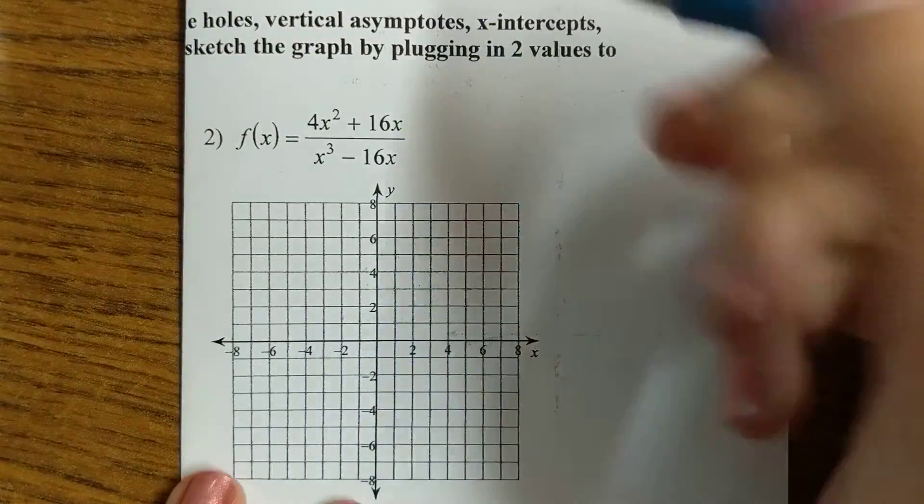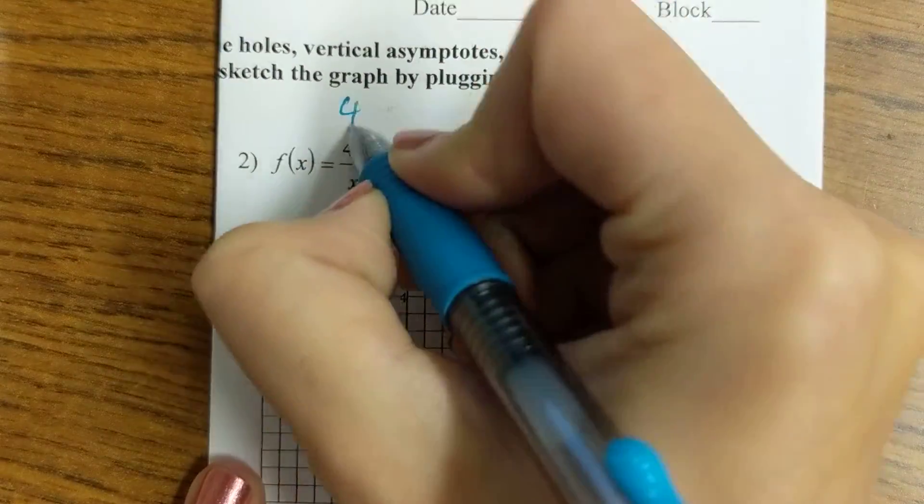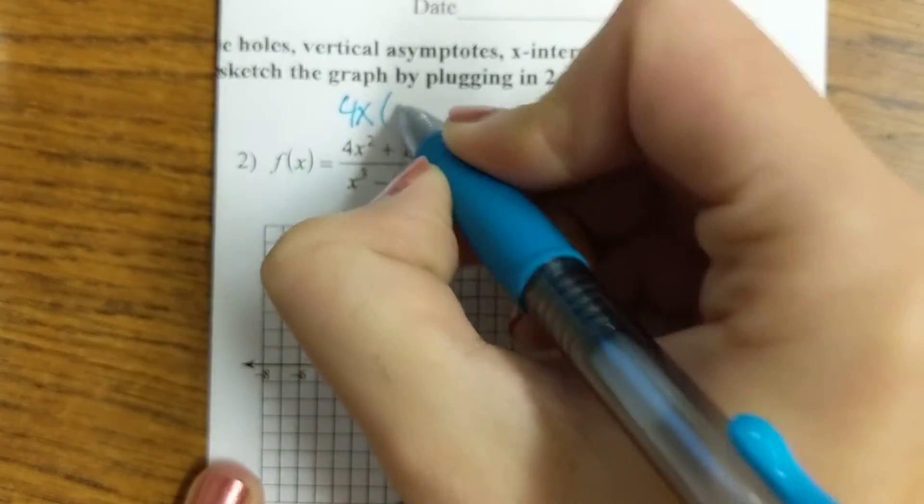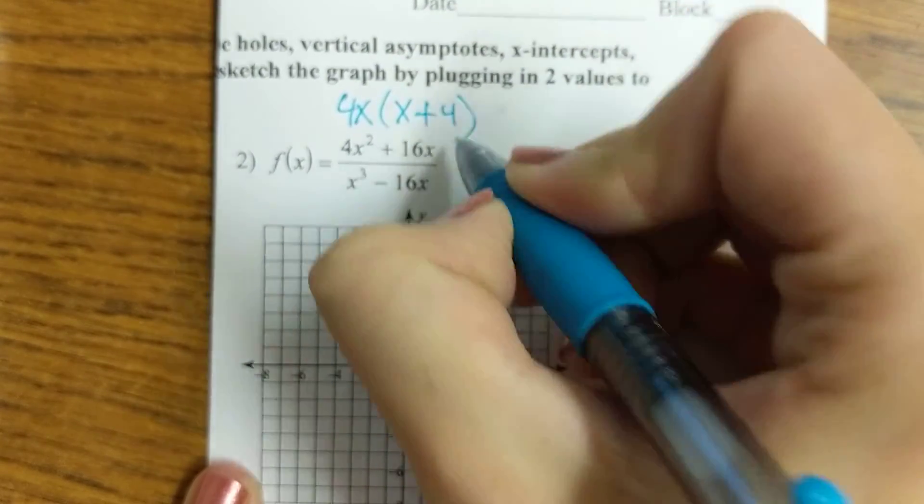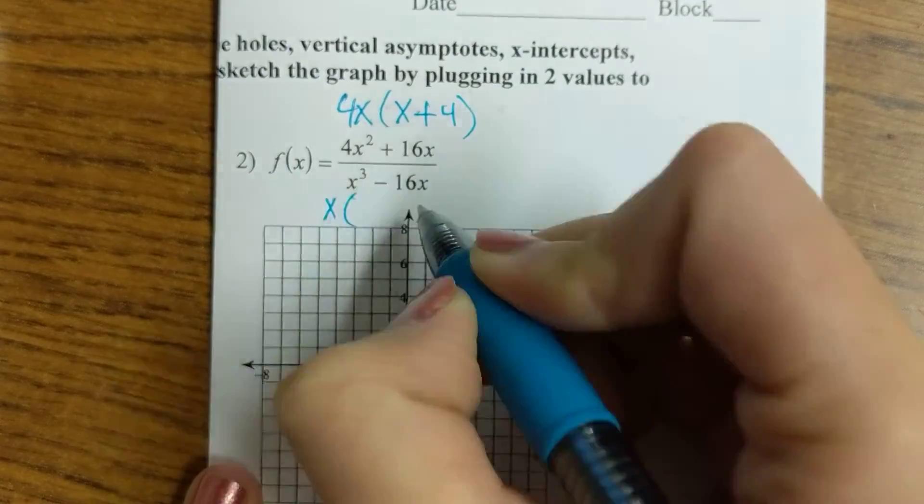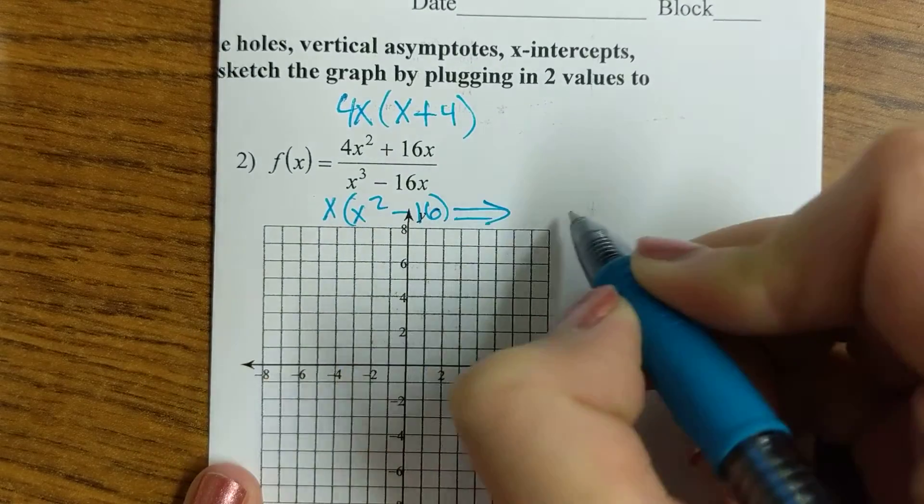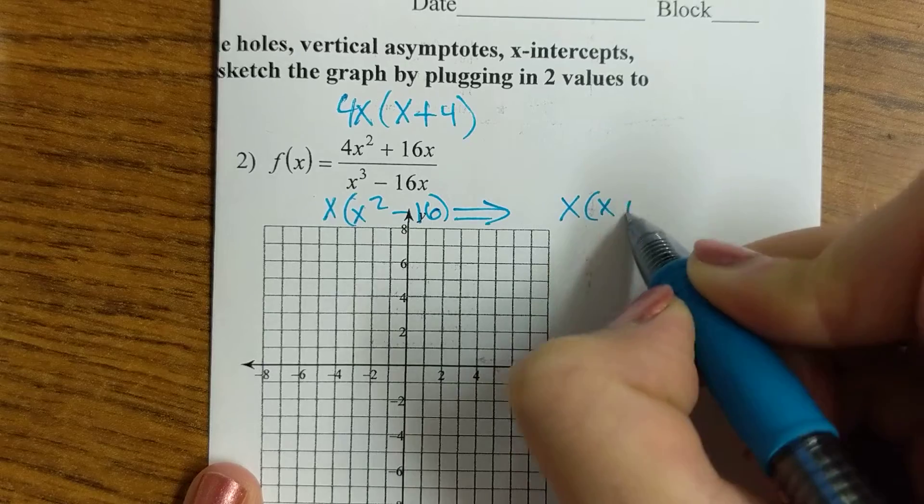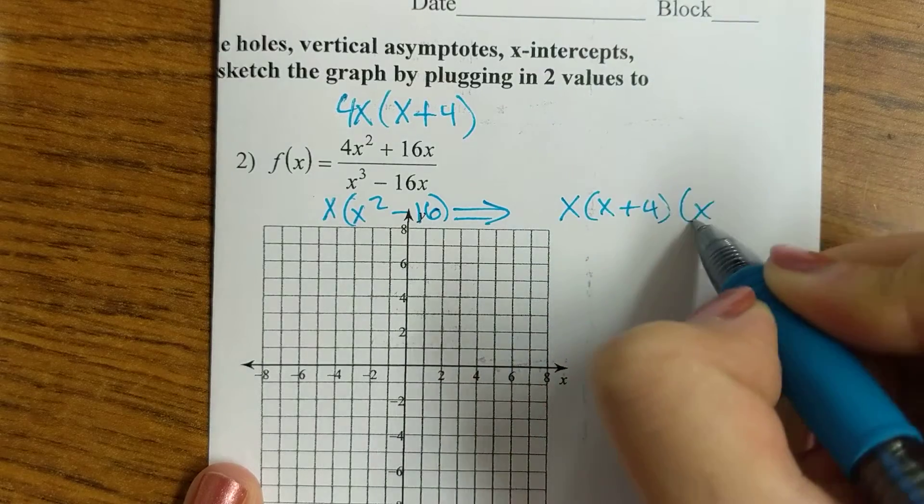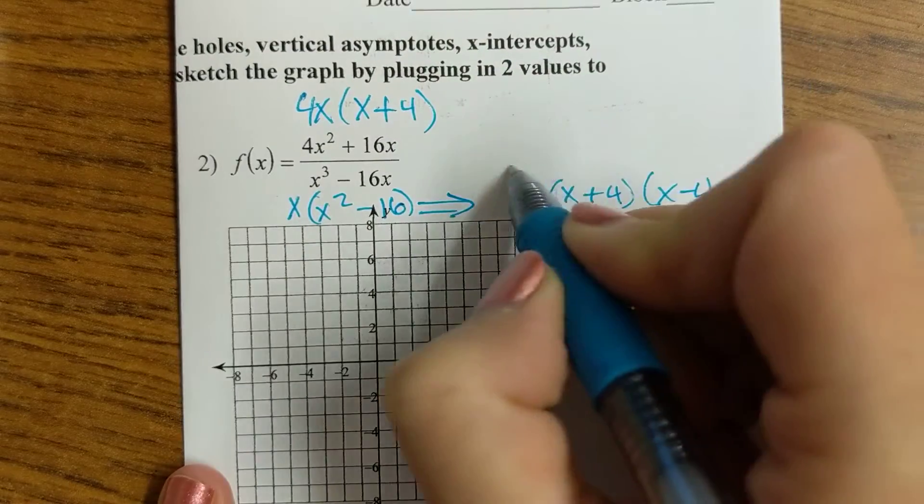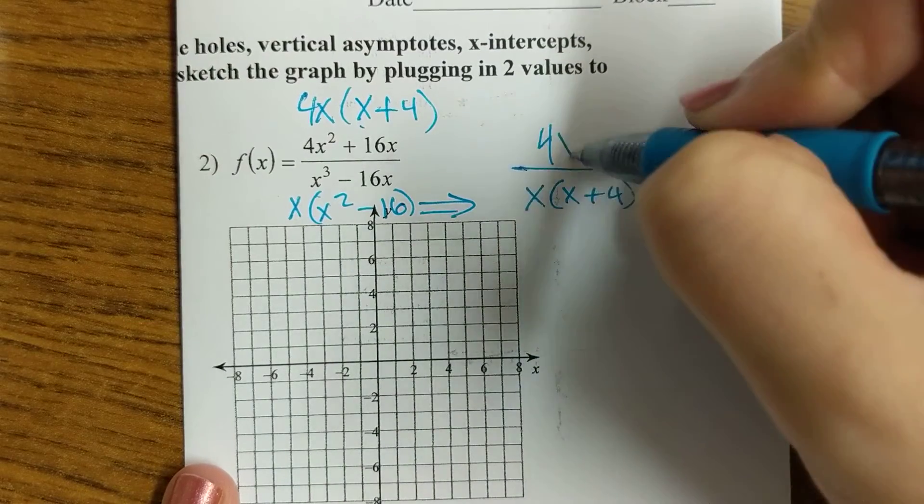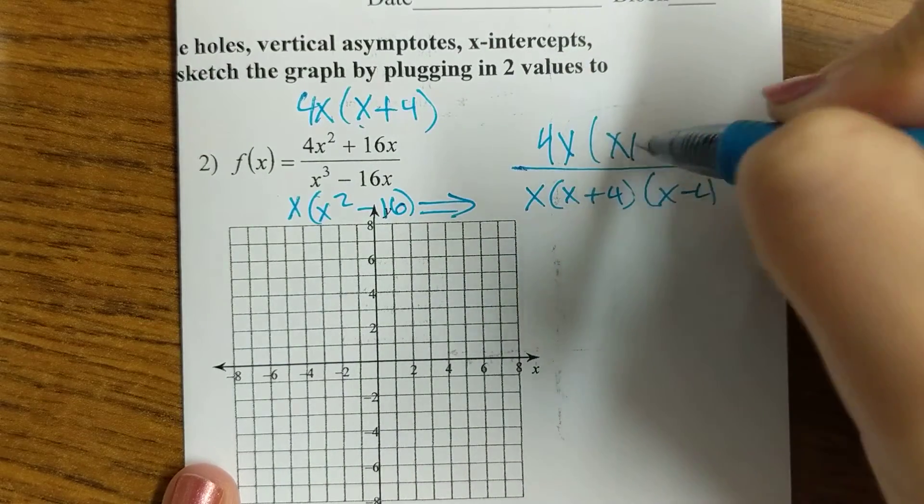Okay, so to start off, I'm going to factor. The GCF is 4x, so I'm left with x plus 4. Then I can take out an x here, and I have x squared minus 16, difference of perfect squares, so that will factor to be x times x plus 4 times x minus 4. And the numerator is 4x times x plus 4.